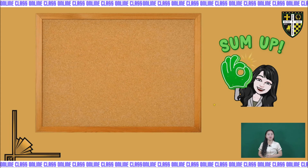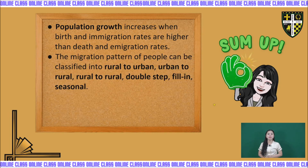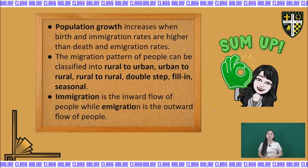For our summary: population growth increases when birth and immigration rates are higher than death and emigration rates. Migration patterns can be classified into rural to urban, urban to rural, rural to rural, double step, fill-in, and seasonal. Immigration is the inward flow of people while emigration is the outward flow of people.